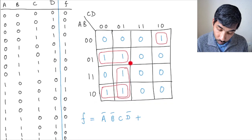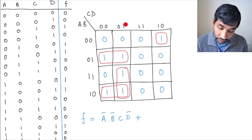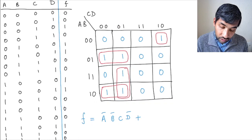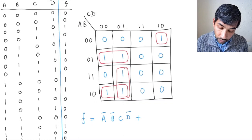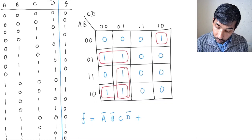Let's write the equation for this group. In this group, C is constant while D is changing. So because D is changing, D will not appear in the term. You will have C-bar, A-bar, B, C-bar.